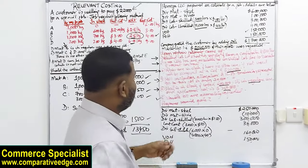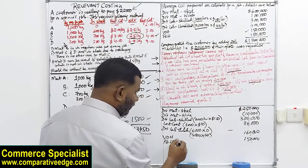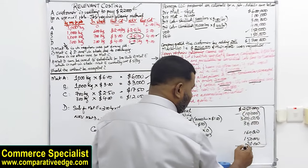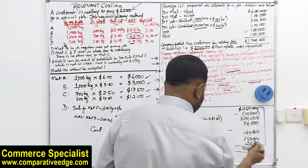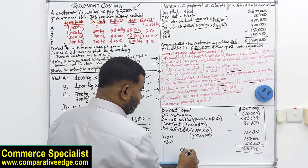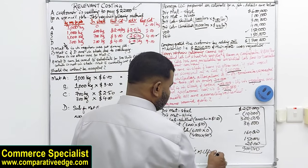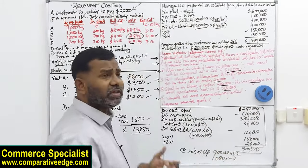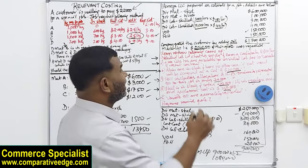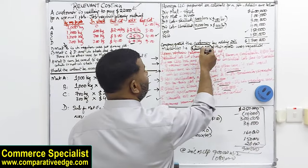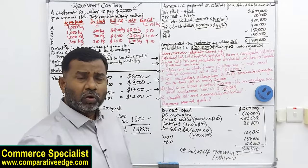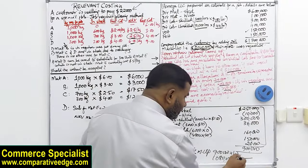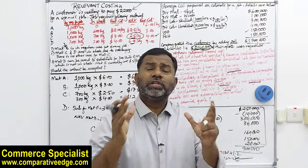Adding all the relevant costs and subtracting the ten thousand saving on wires gives a total relevant cost of nine hundred thousand dollars. Applying the twenty percent markup gives a revised quote of one million and eighty thousand. Compare this to the original rejected quote of two million and forty thousand — a huge difference. The original quote was rejected because we didn't apply relevant costing. Understanding relevant costing dramatically changes your quote.